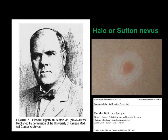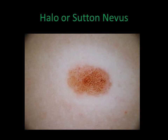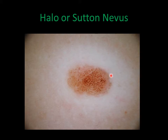This special kind of nevus, characterized by a white halo surrounding the lesion, was first described by Richard Sutton. Here we see the dermoscopic image of a beautiful example. As you can see, the nevus is surrounded by a white halo, and in the center there is the nevus showing a typical globular pattern.